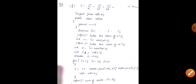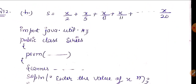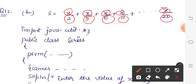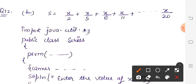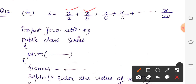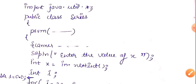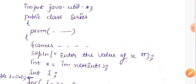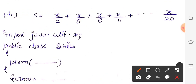Next is question 12, part H. Look at the series — the numerator is X throughout: X/2 + X/5 + X/8 + X/11 + ... up to X/20. The upper part is the same X everywhere. Since X is a variable, we have to input the value of X. Now look at the denominator pattern: 2, 5, 8, 11, 20 — from 2 to 5 is plus 3, 5 to 8 is plus 3, 8 to 11 is plus 3. So the increment is 3 each time.